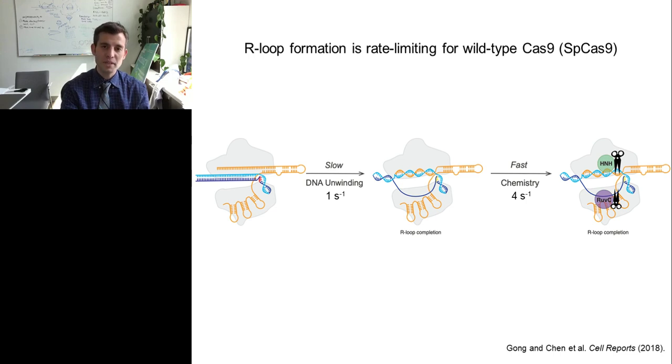What we've shown earlier is that R-loop formation is the rate limiting step for wild type Cas9, which we'll call SpCas9. Upon initial binding of the DNA by Cas9, there's R-loop formation, which means that the target strand is base pairing with the CRISPR RNA and the non-target strand is being looped out away from the rest of the complex. That will be targeted by the RuvC domain, while the target strand will be targeted by the HNH domain. We showed that DNA unwinding is relatively slow, one per second, as compared to chemistry, which is fast at four per second. That means that the unwinding of the DNA is actually rate limiting. As soon as the DNA is unwound, the chemistry can occur.